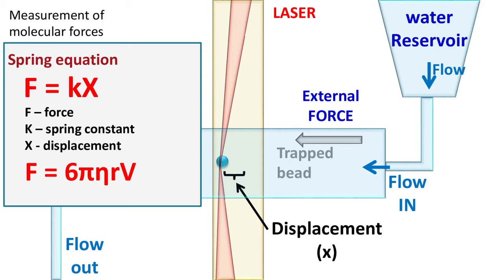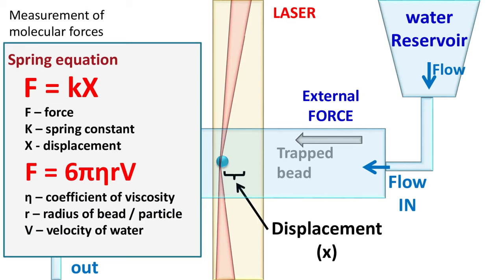This is nothing but the Stokes law of viscosity. Here, eta is the coefficient of viscosity. R is the radius of bead. V is the velocity of water flowing through the flow cell.